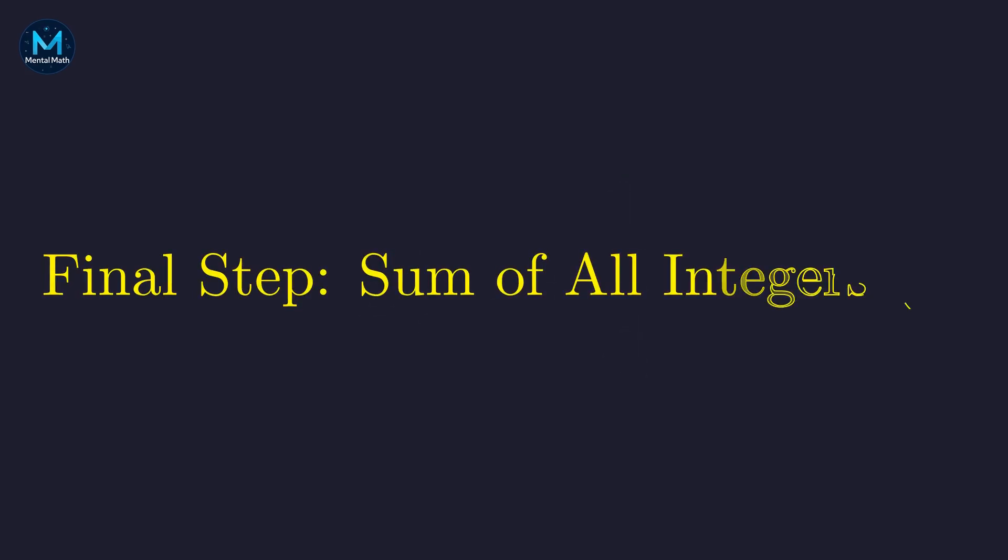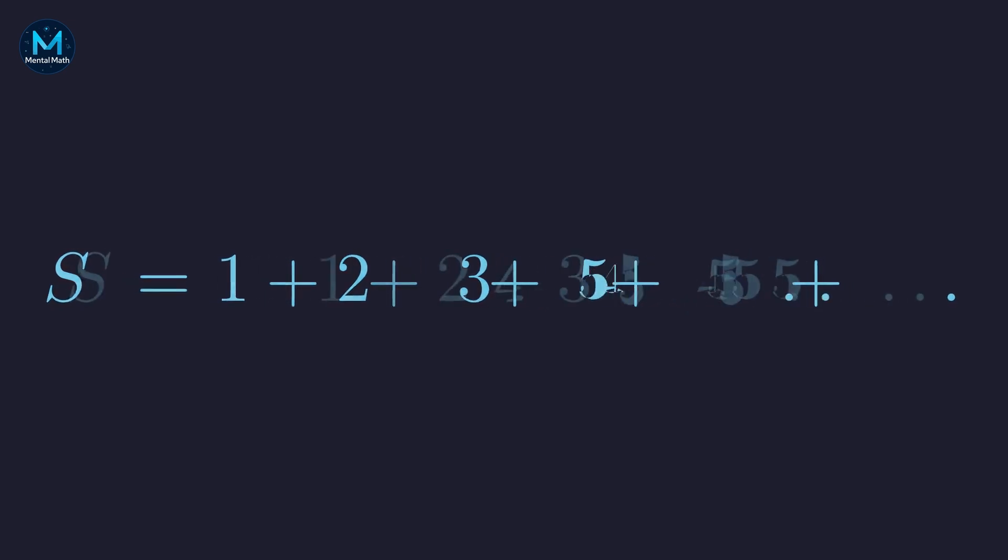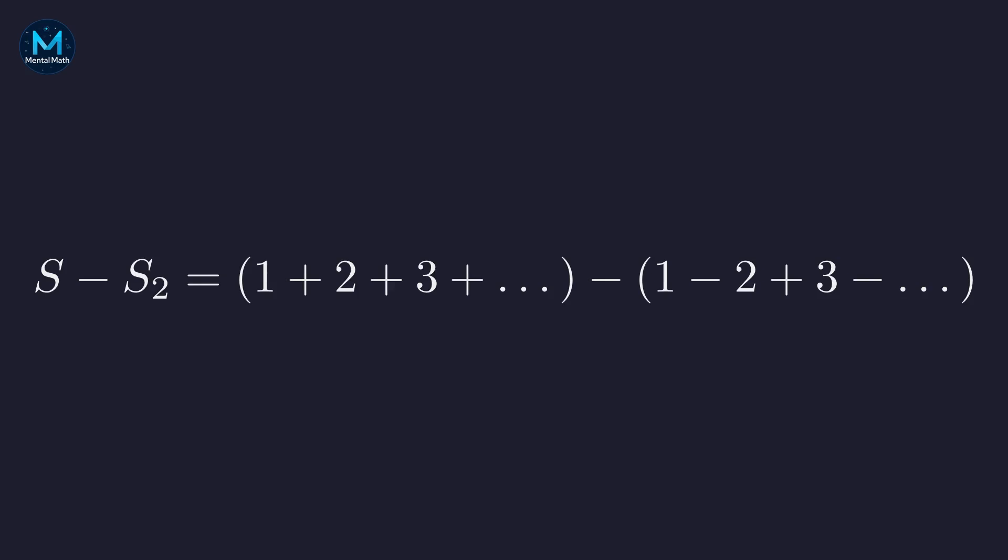It is now time to tackle the original problem, the sum of all positive integers, which we will call S. Our series S is 1 plus 2 plus 3 and so on. The final formal manipulation involves subtracting S sub 2 from S. Let's write out the term by term subtraction: S minus S sub 2.